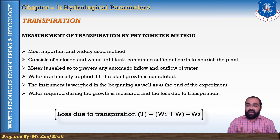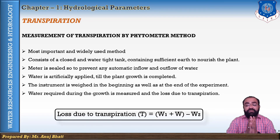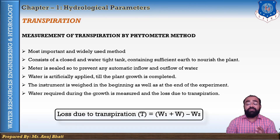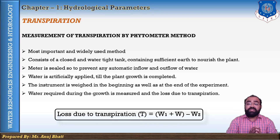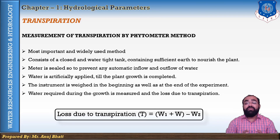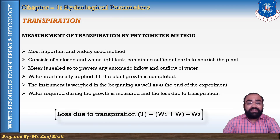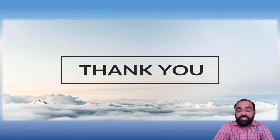The values obtained by the phytometer test must be multiplied by a suitable factor to obtain possible field results, because this test is done with a closed instrument, while in the actual scenario the plants and trees are in the open atmosphere, so we have to consider all other factors too. This was about today's lecture. Thank you so much, students, for your kind attention. We will see you in the next lecture.